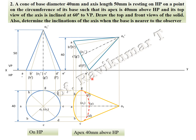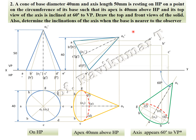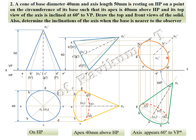For the third position, the base is near to the observer, meaning the apex should be away from the observer. At 60 degrees to VP, you can observe the base is completely near to the observer and apex is away — this condition is satisfied. Draw projection lines upward. The bottom face is completely visible, draw with visible line. Join any two generators — that completes the third position.